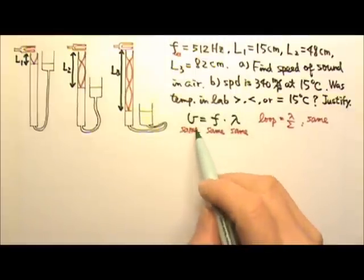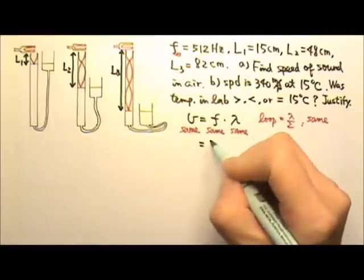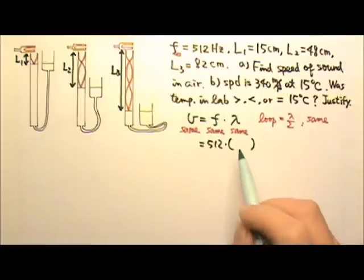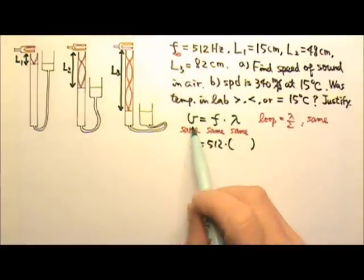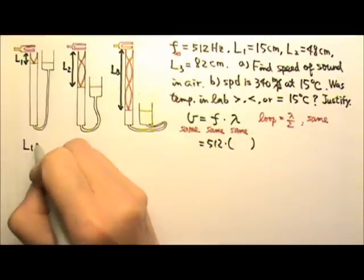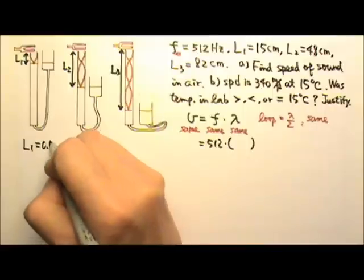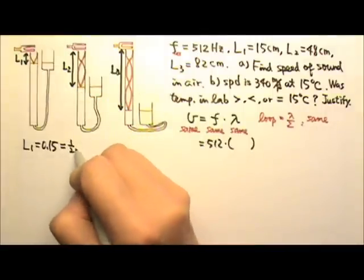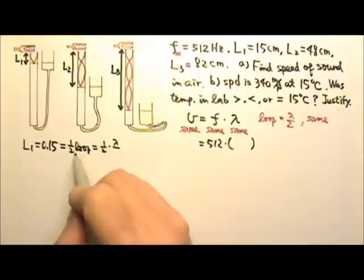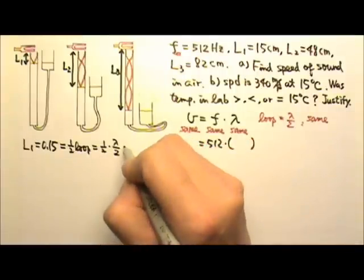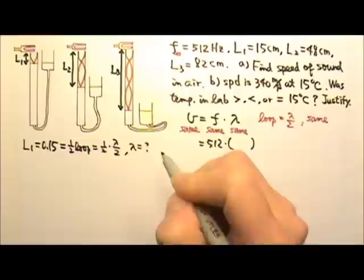To find the speed of sound in air, we just have to use the frequency 512 times the wavelength. So we have to find the wavelength. In our last lesson, we could say that L1 is 15 centimeters, 0.15 meters, and that's half a loop. And one loop is always half a wavelength. So we can get wavelength this way.